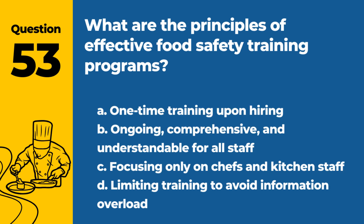Question 53. What are the principles of effective food safety training programs? A. One-time training upon hiring. B. Ongoing, comprehensive, and understandable for all staff. C. Focusing only on chefs and kitchen staff. D. Limiting training to avoid information overload. Answer: B. Effective training should be continuous, cover all relevant topics, and be understandable for all employees.